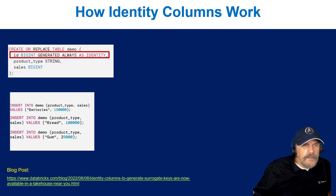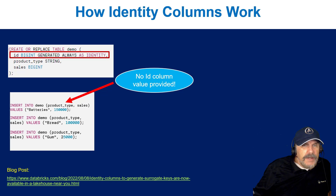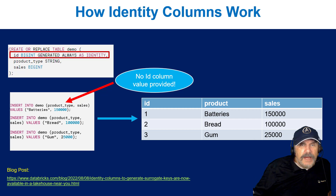Here are some examples of doing inserts into the table. You are not giving it a value for the identity column — you're inserting the product type and sales, but you ignore the first column, which is the identity column. What you get is the product you inserted, the sales, and an automatically increasing integer.